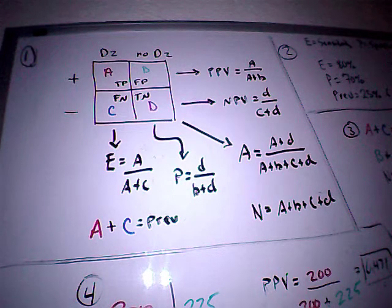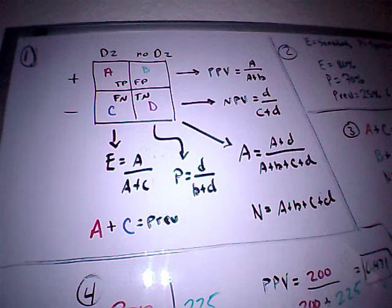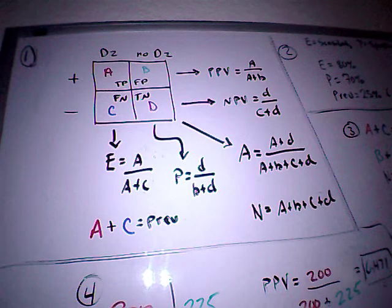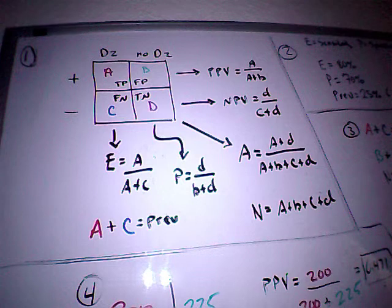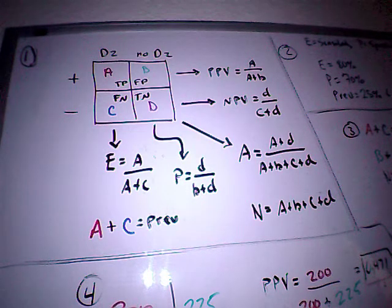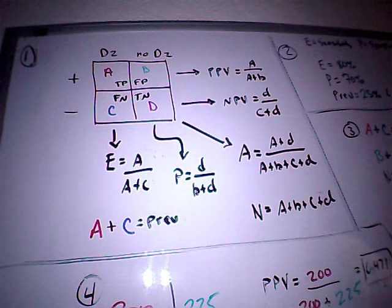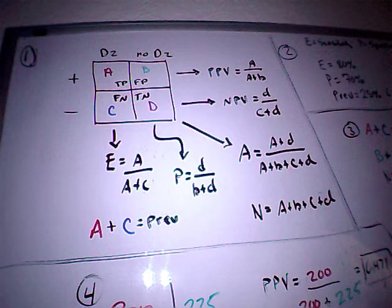So what do we have going on here? We have some sort of test that has 80 percent sensitivity, excuse me, 70 percent specificity, and the disease that we're looking for has a 25 percent prevalence. That means that 25 percent of the population or the sample of the population that we're looking at has the disease.